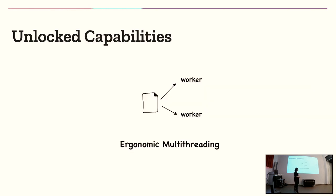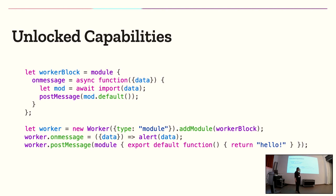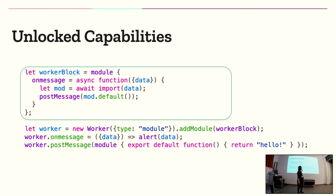The other thing layer 0 proposals unlock is ergonomic multi-threading. In the past, if you wanted to send a script to a worker, you either needed it already in a file, or you needed to use a blob URL string and pass that into a worker. A blob URL string runs into various CSP security mechanisms, and then you start modifying your CSP to accept them — which isn't what we want. What many folks have been asking is to ergonomically pass dynamically created modules to workers, and that's exactly what we have here with the module keyword.